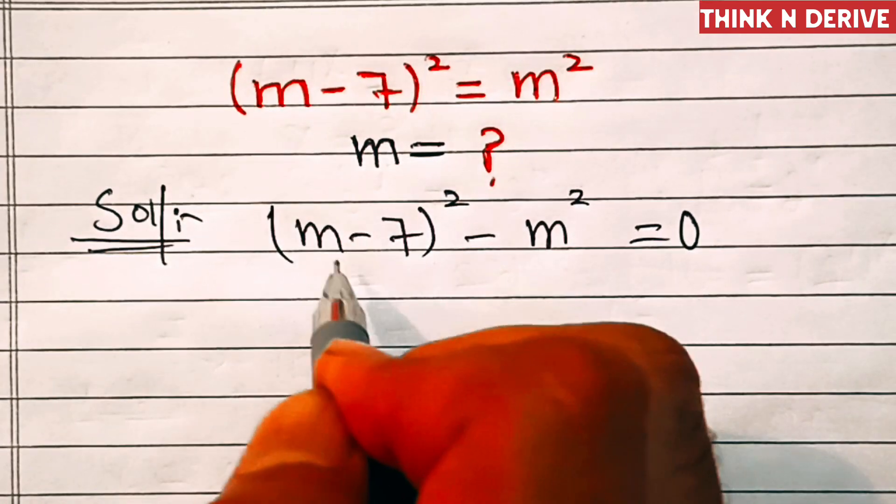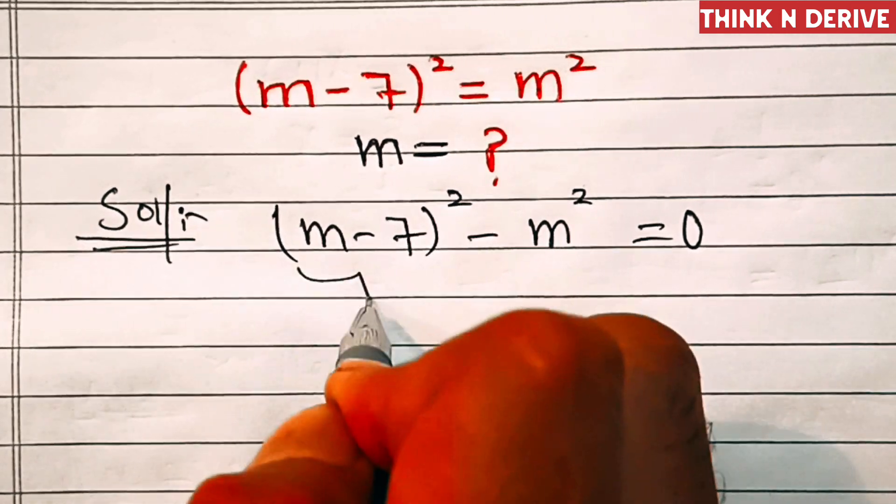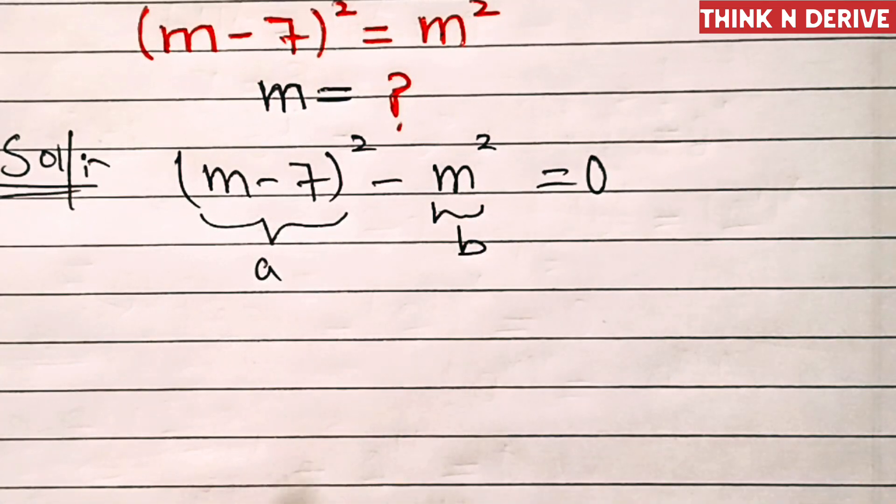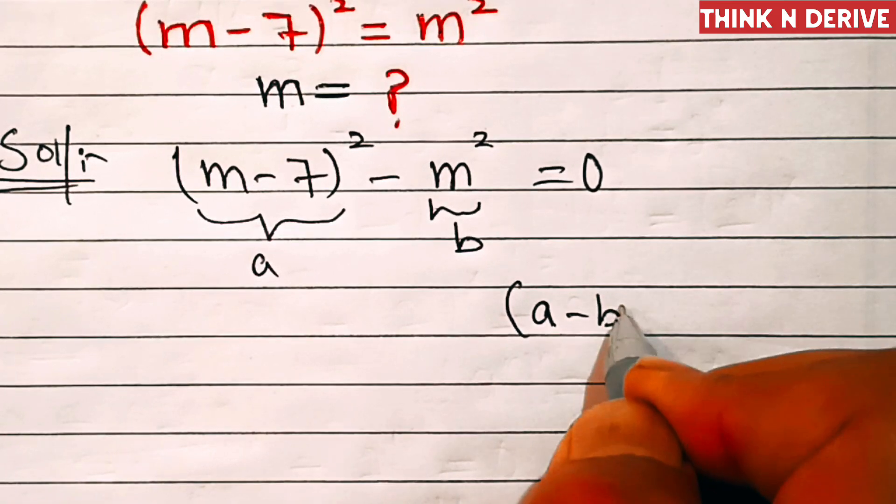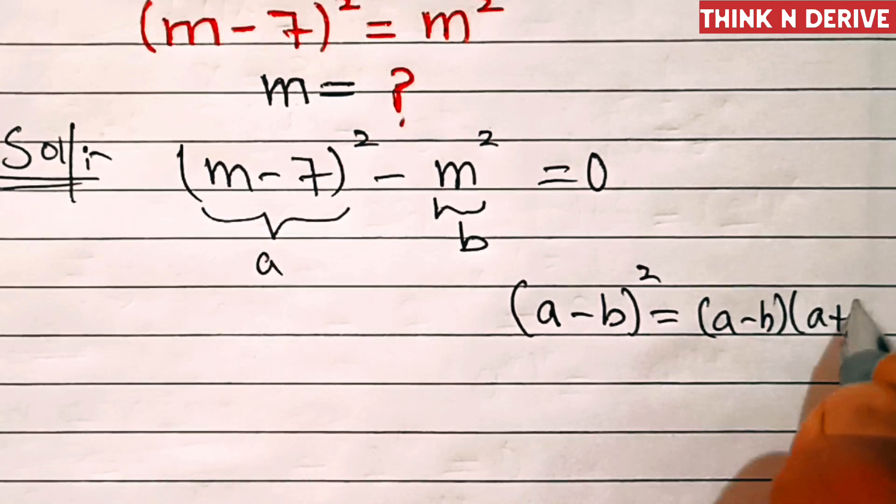Now if you clearly see, this is of the form a square minus b square, where this is a and this is b. We know that a square minus b square equals a minus b times a plus b.